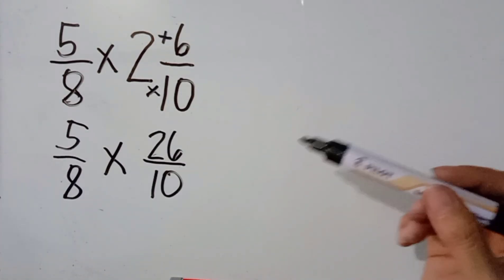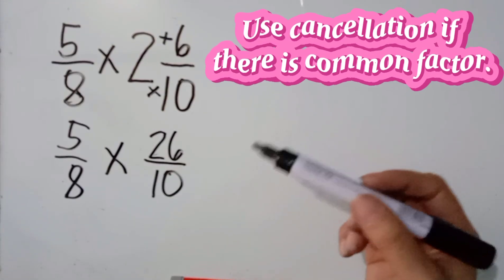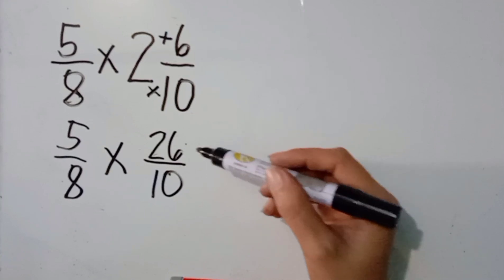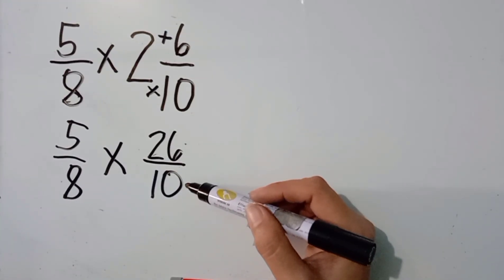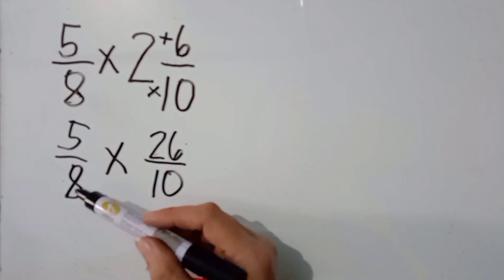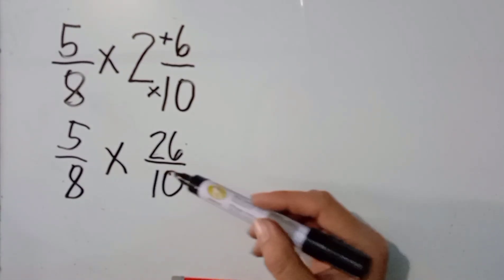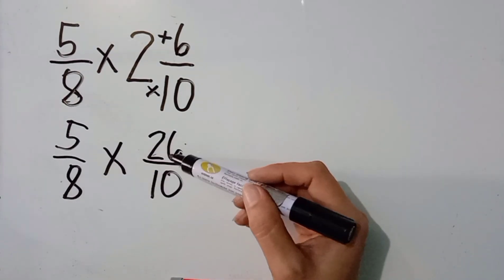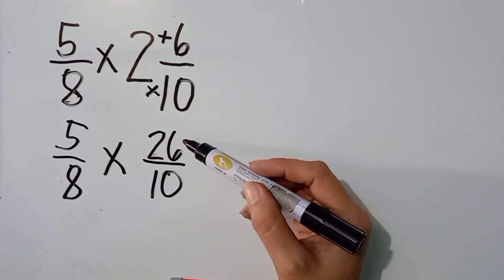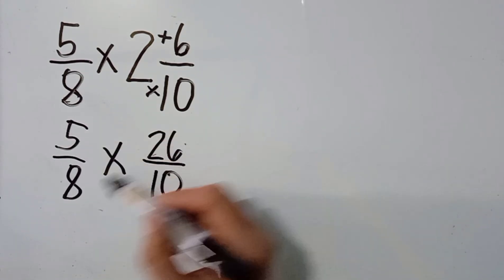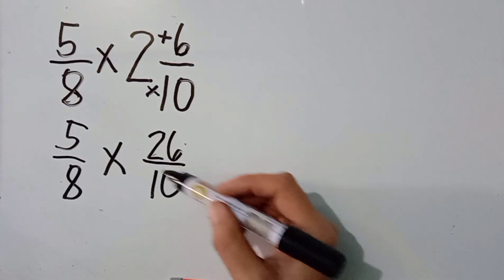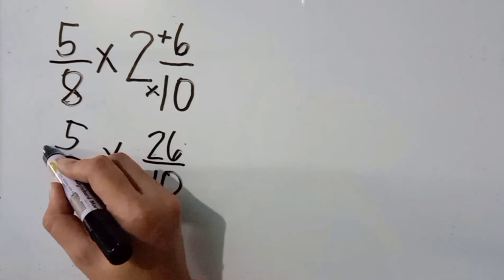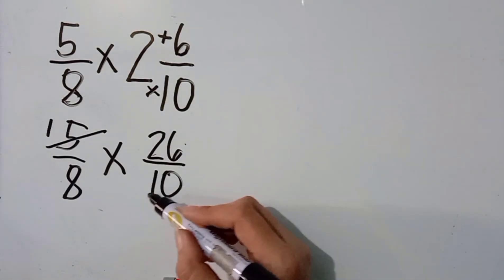So, the next step, we are going to use cancellation if there is a common factor among the numbers. Vertically or diagonally. Ang 26 over 10 ba may common factor? Yes po, meron. Ang 5 over 8 kaya may common factor? Wala po. How about diagonally? 5 and 10 po ba may common factor? Yes po, meron. How about 8 and 26 po may common factor? Yes po, meron po silang common factor. So, pwede natin gamitin diagonally. 5 and 10 muna unahin natin. Ang 5 and 10 may common factor sila na 5. So, let us divide. 5 divided by 5, the answer is 1. 10 divided by 5, the answer is 2.